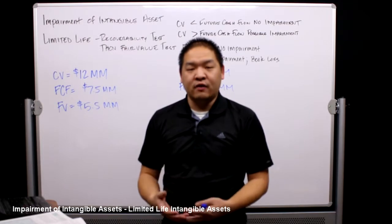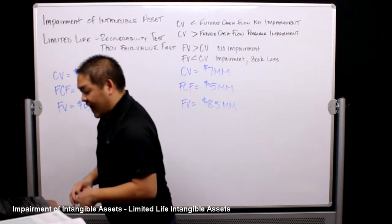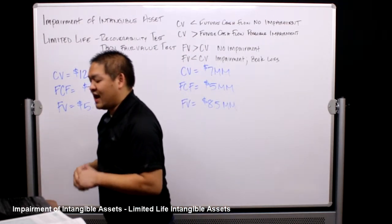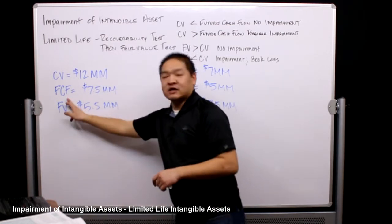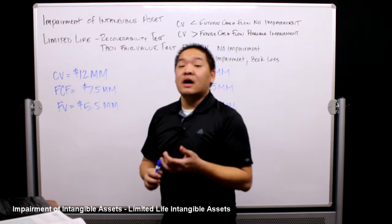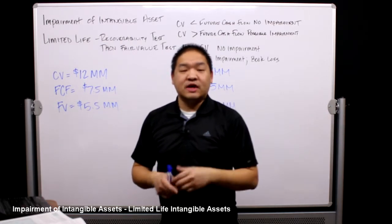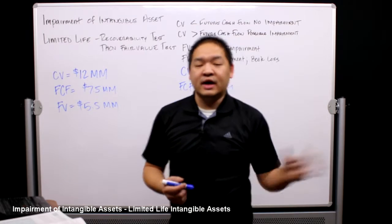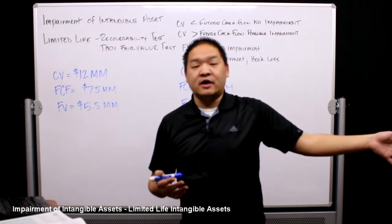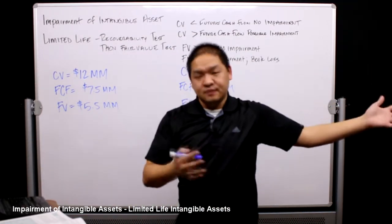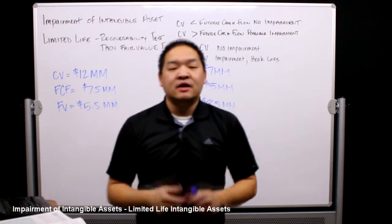So on the books for Black Asset Inc., they have this patent for twelve million dollars — that's how much they're carrying it for. Black Asset's accounting and finance department calculated the expected future cash flows from the patent and found it to be seven point five million dollars. That means from now until the patent expires, they will recover seven point five million dollars from use of that patent.